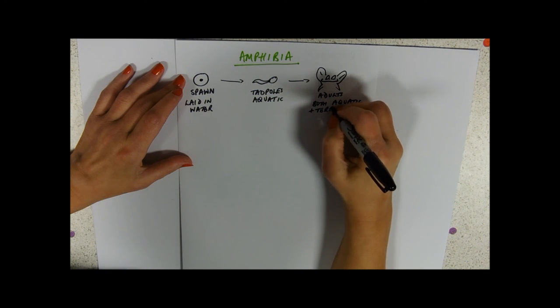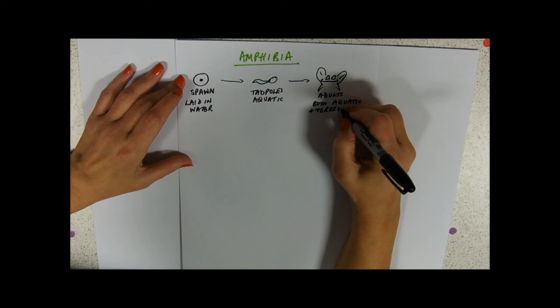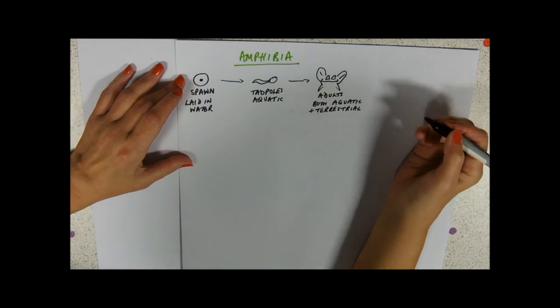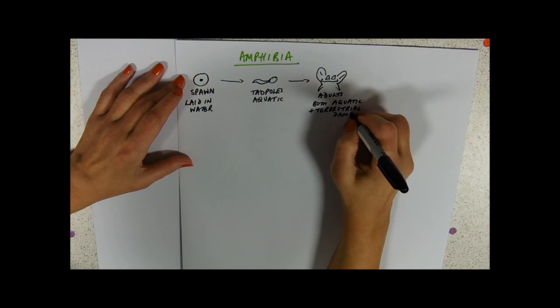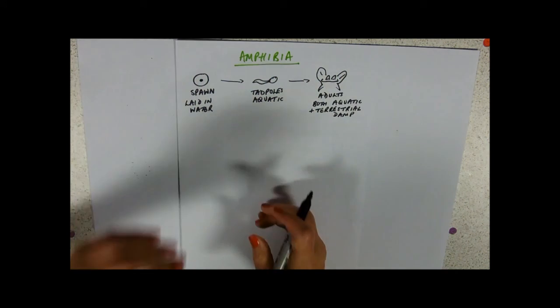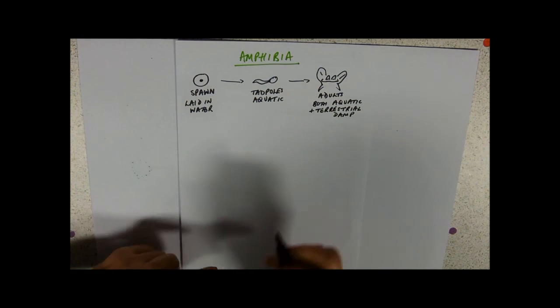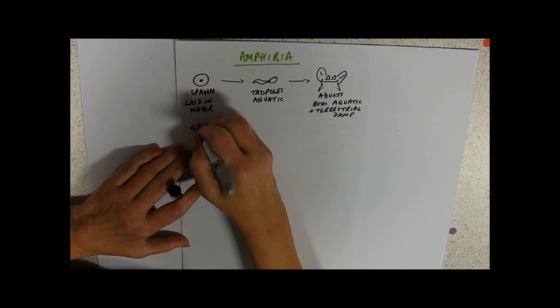So frog or toad, newt, quite happy living anywhere terrestrial as long as it's damp. They do prefer damp areas and we'll see why in a minute. So let's deal with tadpoles first. Gas exchange in tadpoles.